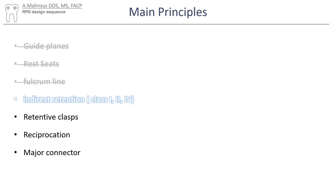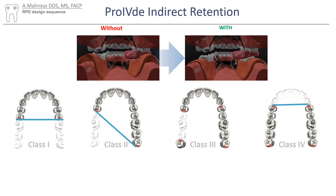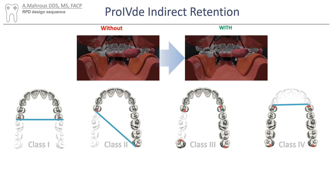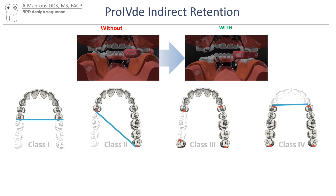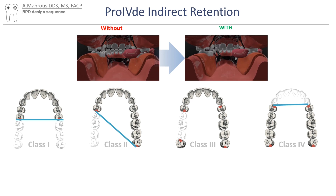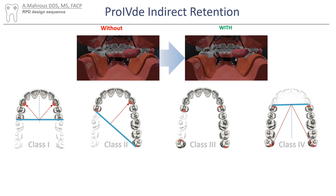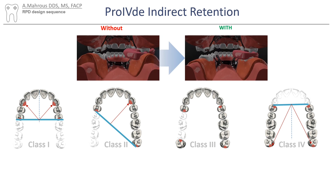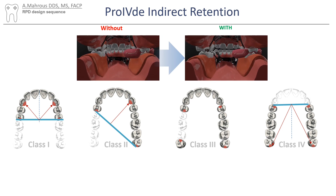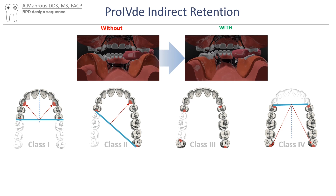The next step is to provide indirect retention for class one, two, and four. Indirect retention prevents the tissue away movement of the RPD denture base during function. For more information on indirect retention, please find the video linked here. Indirect retainers should be placed on a tooth that is located perpendicular to the fulcrum line and as far away as possible from it. In certain situations like class one and four, this is not possible due to the position of the fulcrum line.